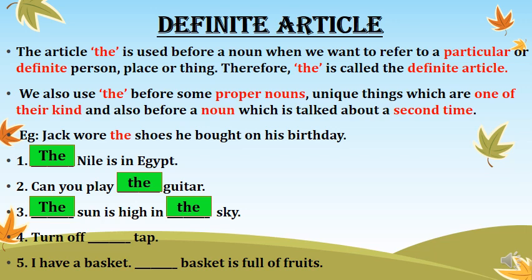'Turn off dash tap.' Here we are talking about a particular tap, which is a thing. When we talk about any particular thing, we use 'the': 'Turn off the tap.' Next: 'I have a basket. Dash basket is full of fruits.' We are talking about the basket a second time, so we use 'the': 'I have a basket. The basket is full of fruits.'